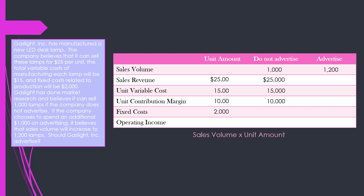We have $2,000 of fixed costs which we're stuck with no matter what. If we don't advertise, we're not going to increase those fixed costs because we're not going to pay that additional $1,000 for advertising, so our fixed costs are still going to be $2,000. That means if we don't advertise and sell 1,000 lamps at our proposed selling price and production cost, our operating income from the sale of these new LED desk lamps is $8,000.